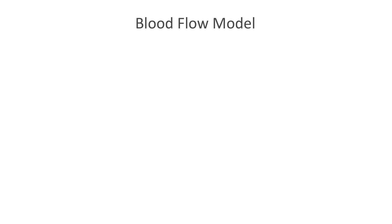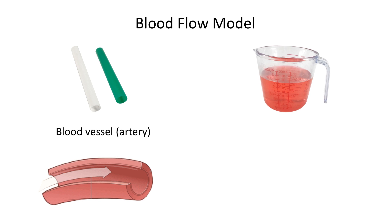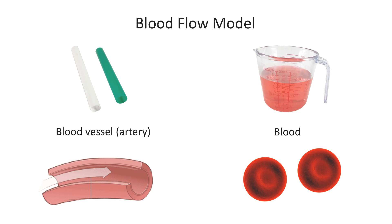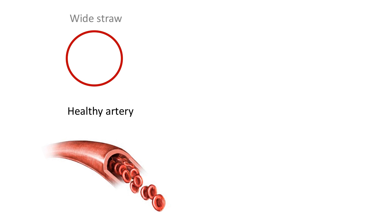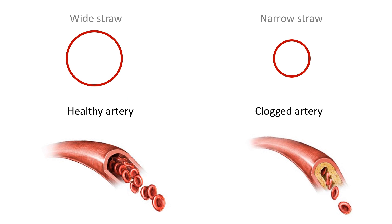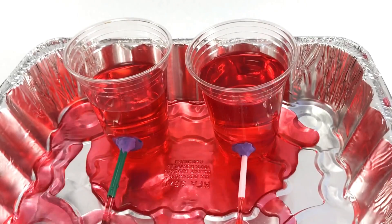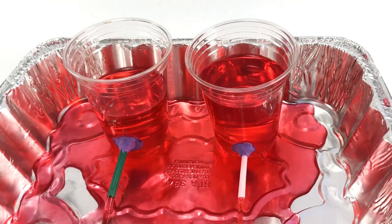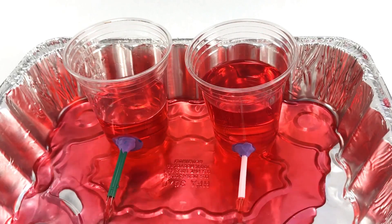You can find out yourself by building a simple blood flow model in which straws act as the artery and water as blood. A white straw represents the healthy artery and a narrow straw, the clogged one. Put your model together and let the blood flow. What results do you think you will get?